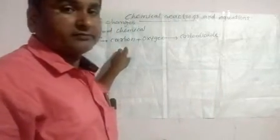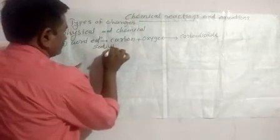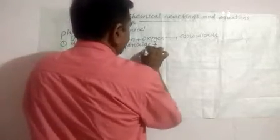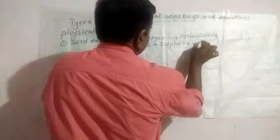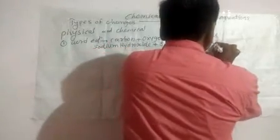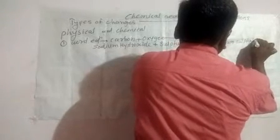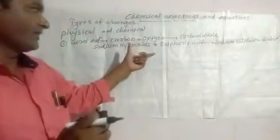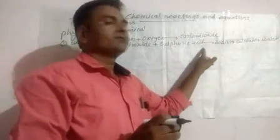Similarly, Sodium Hydroxide — also called Caustic Soda — reacts with Sulphuric Acid, and we get Sodium Sulphate and Water. These chemical reactions written in the form of words are called Word Equations.